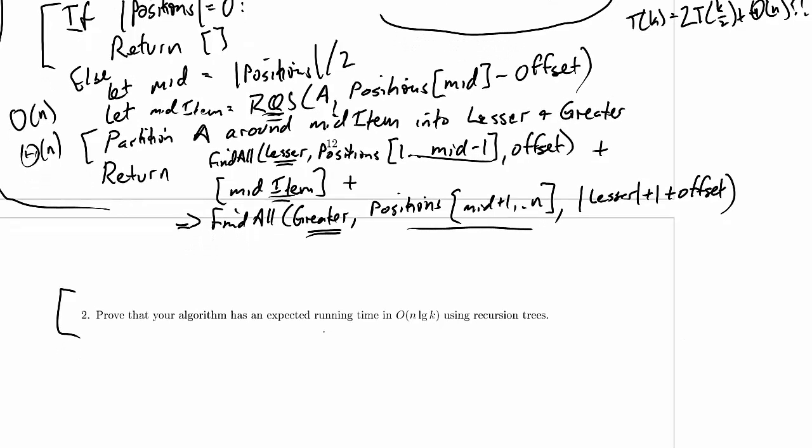So as always, our recursion tree is going to start with a node at the top. Now typically we put n in the node at the top, but what we're really putting in is the problem size. And in this case, the problem size that's relevant is probably k. So I'm going to put k in as the problem size here, and if I need n, then I'm going to work on that a little bit later.